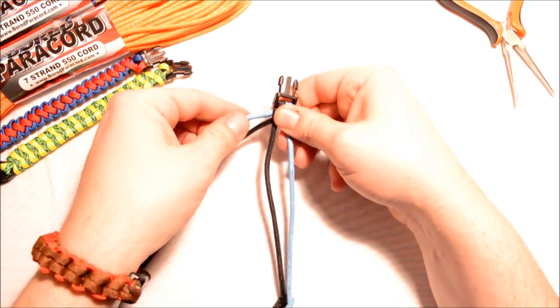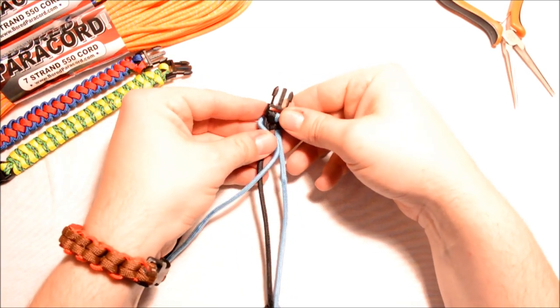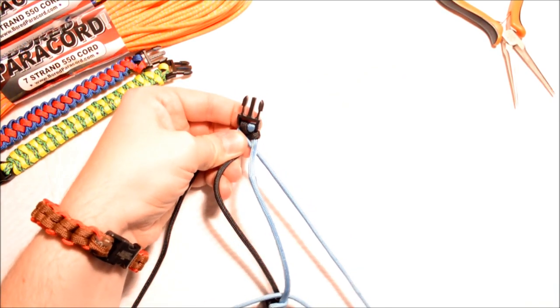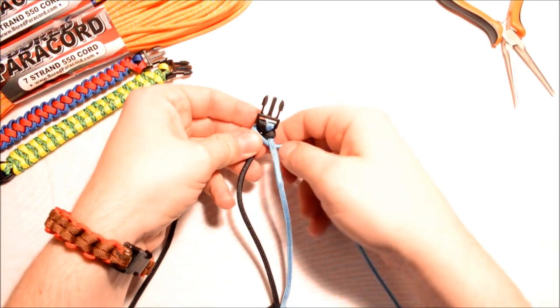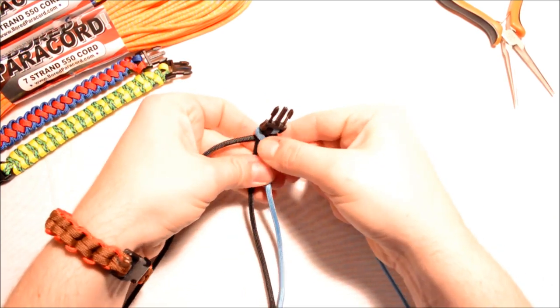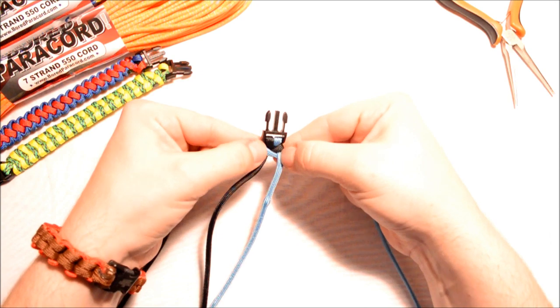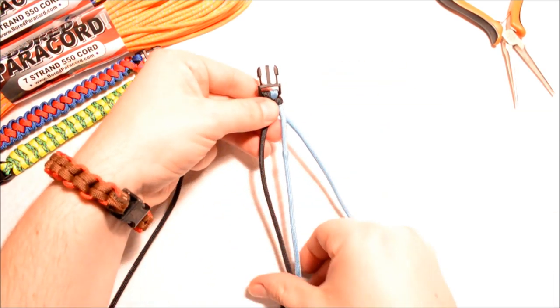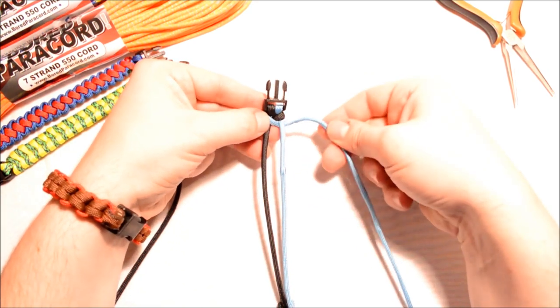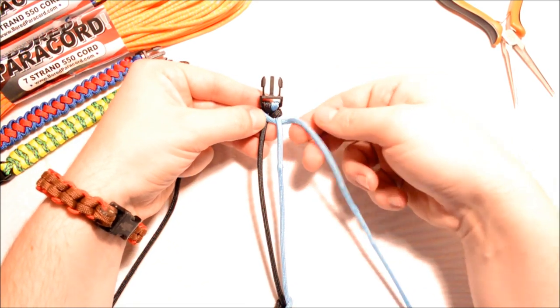Now take your blue one, do the same thing. Go over top the first one, through the middle, and underneath of the second cord. Do the same thing, pull tight, push up. There we go. And by doing that, that keeps everything nice and tight, nice and uniform.